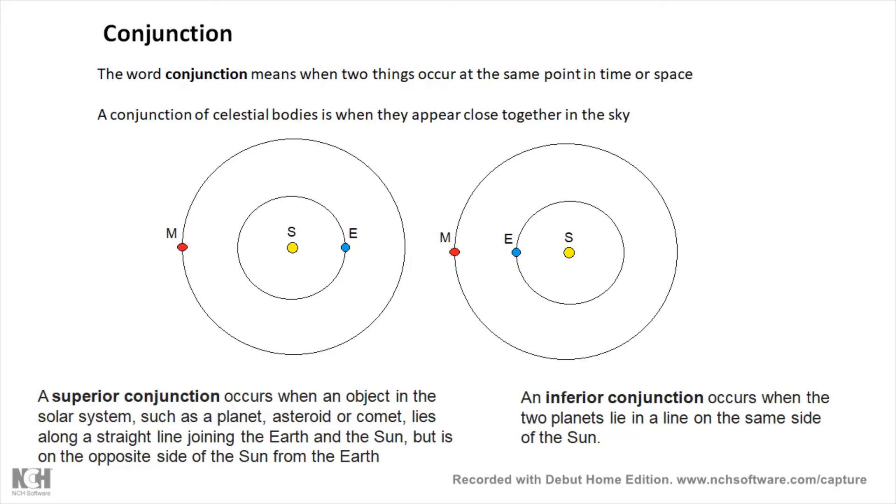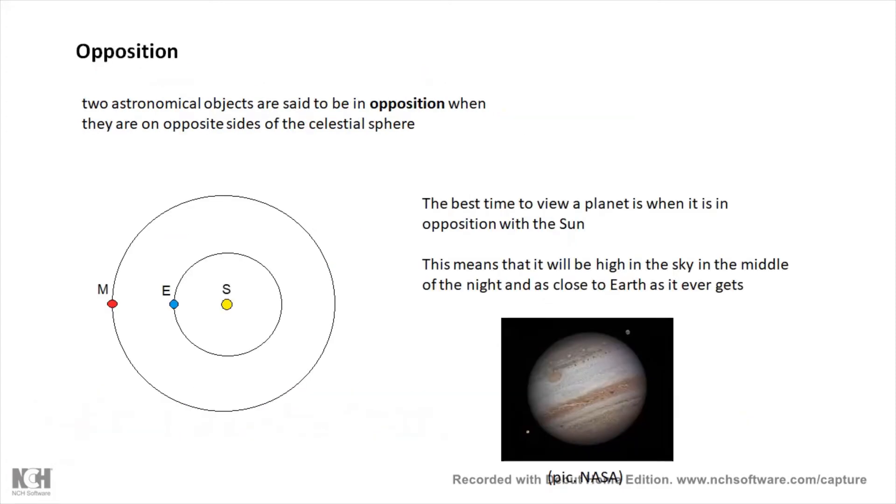An inferior conjunction is when the Sun and the other object are on opposite sides of the Earth, and that is an inferior conjunction. It's actually when if it was a planet then it's when the planet is in opposition, which is the next slide.